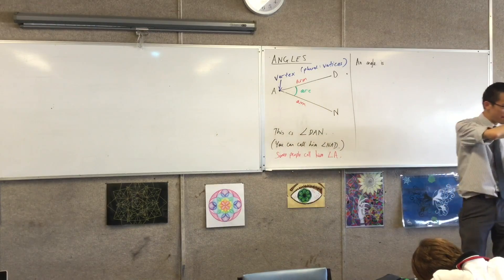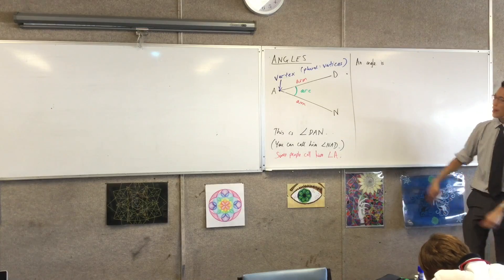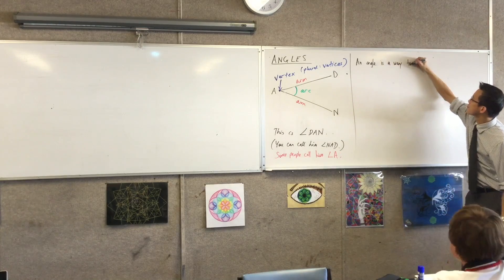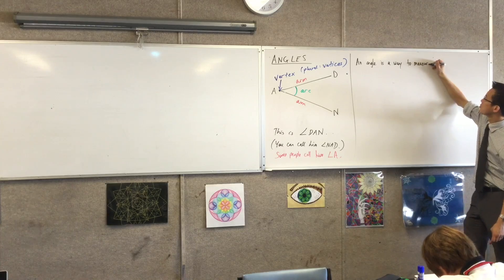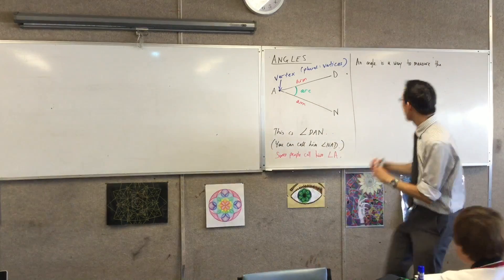It's different to getting a ruler out and measuring how long something is or having an area or something like that. An angle is a way to measure, here's a keyword, the size.